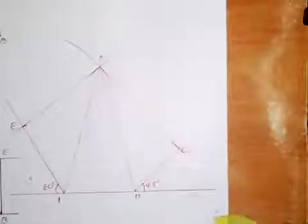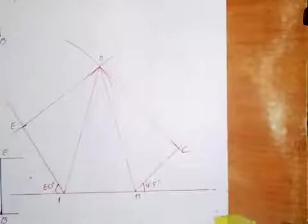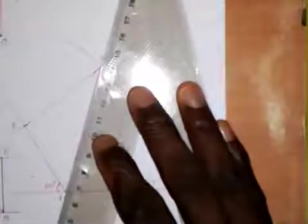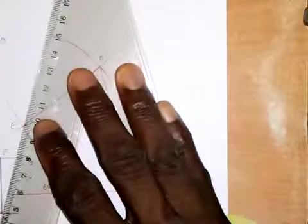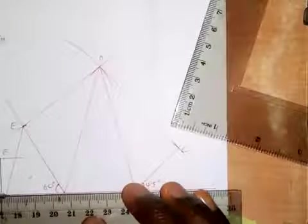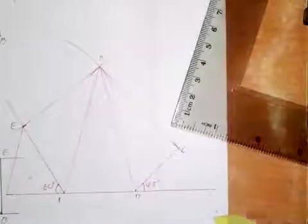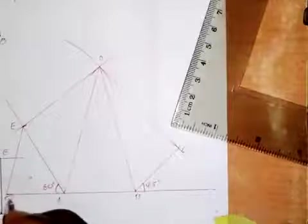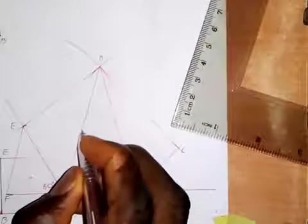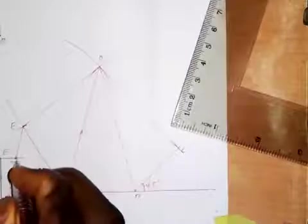I will take my set square and set it on line AD, then shift it to point E. I draw a line through E parallel to AD. This point I'll call point F, so line EF is parallel to line AD.